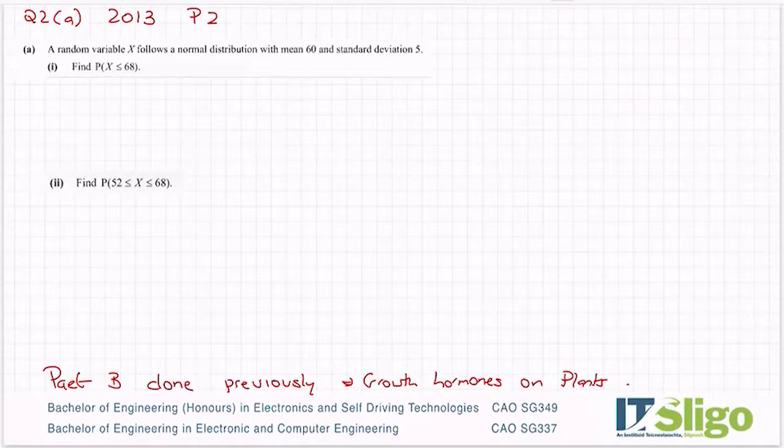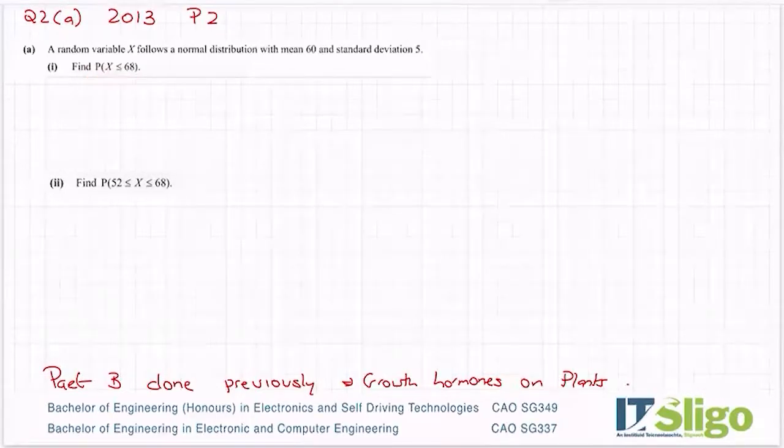So a random variable X follows a normal distribution with mean 60 and standard deviation 5. Find the probability that X is less than or equal to 68, or the percentage chance of it happening, or the proportion that's below it. So it can be described in various ways.